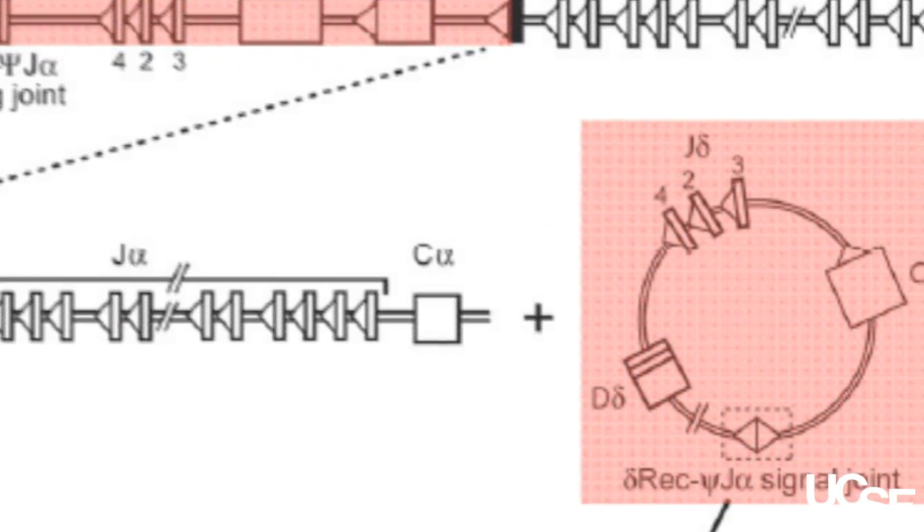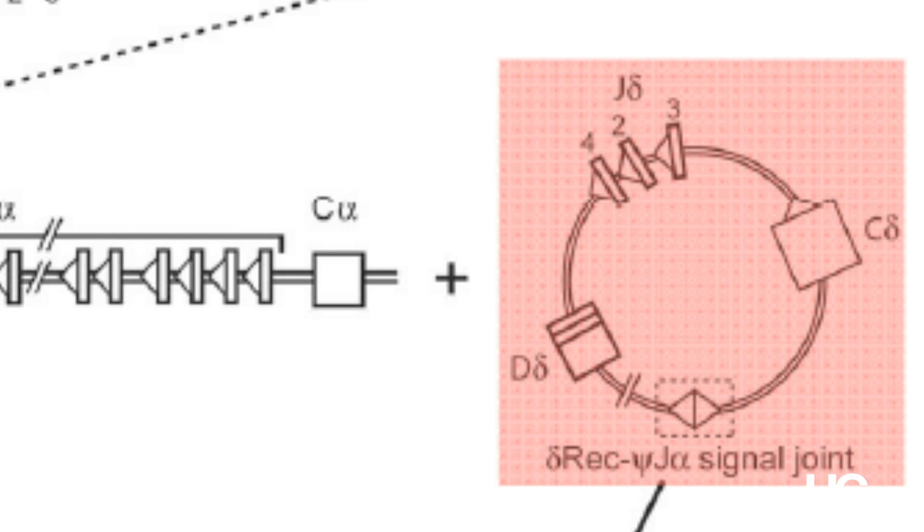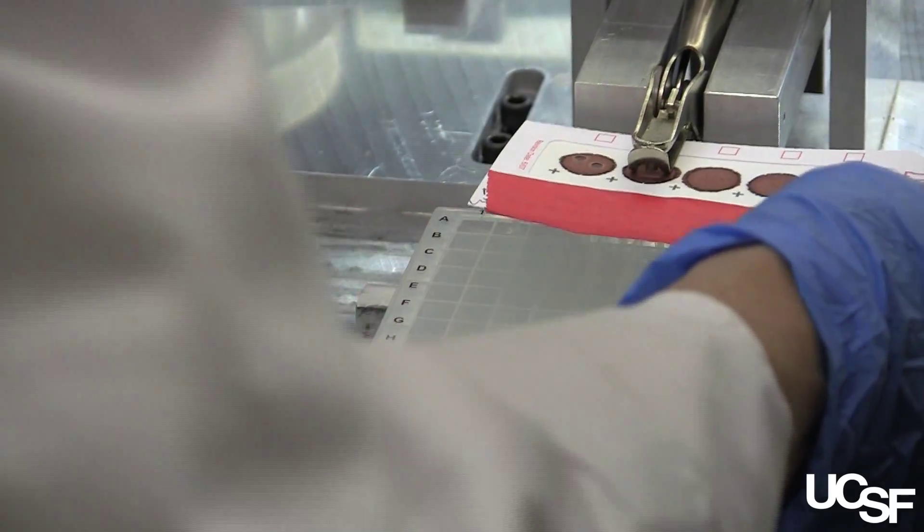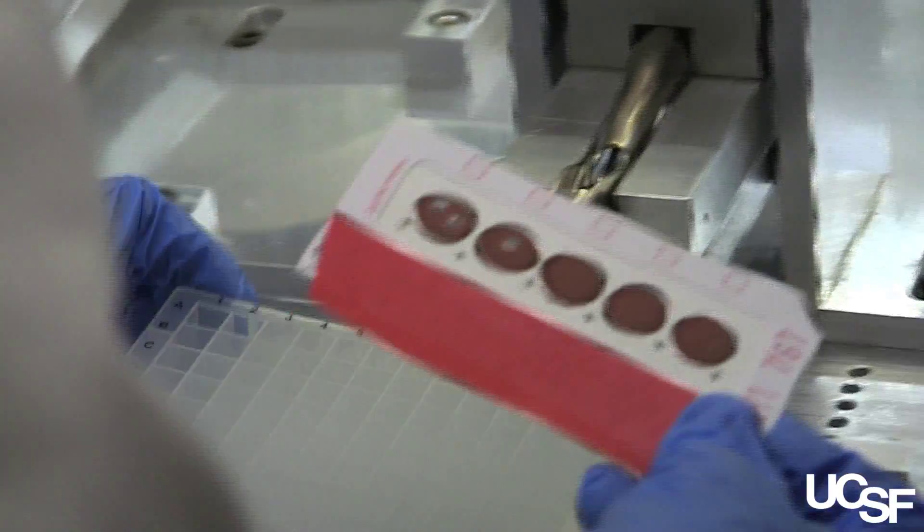We can look at the circles and count them by doing an assay that detects the joint, so the joining of the circles is actually what we're looking for in the SCID assay. If we don't detect any circles, we know that's one of the babies we have to follow up with.